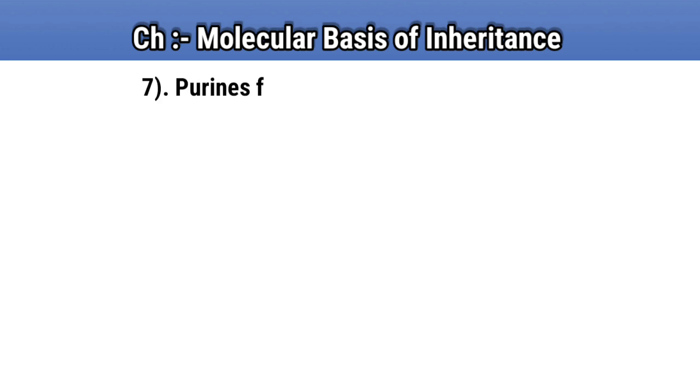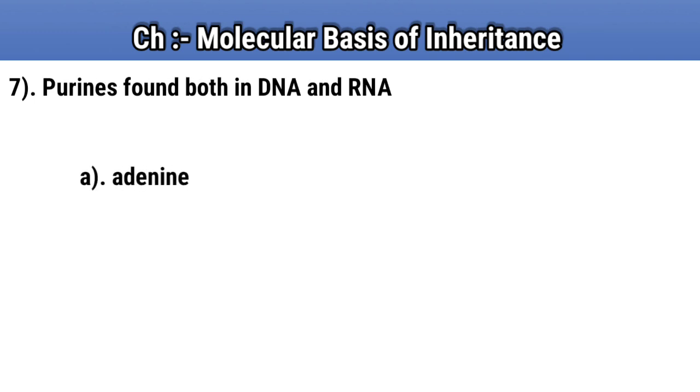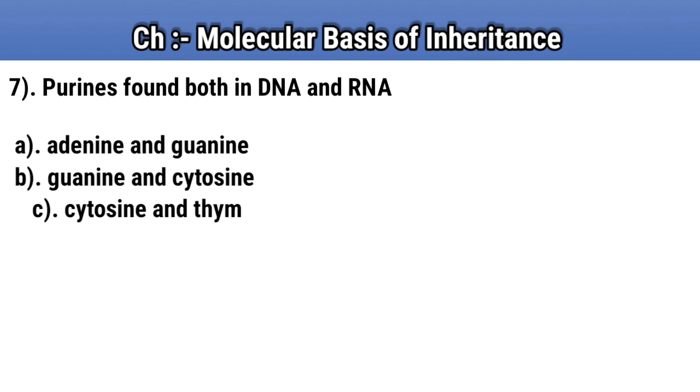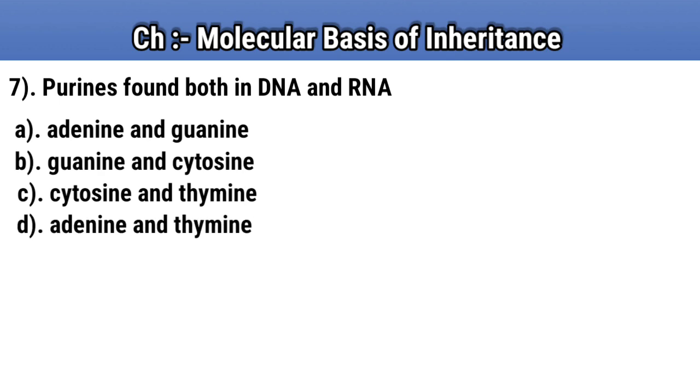Question number 7. Purines found both in DNA and RNA. Option A: adenine and guanine. Option B: guanine and cytosine. Option C: cytosine and thymine. Option D: adenine and thymine. Answer A: adenine and guanine.